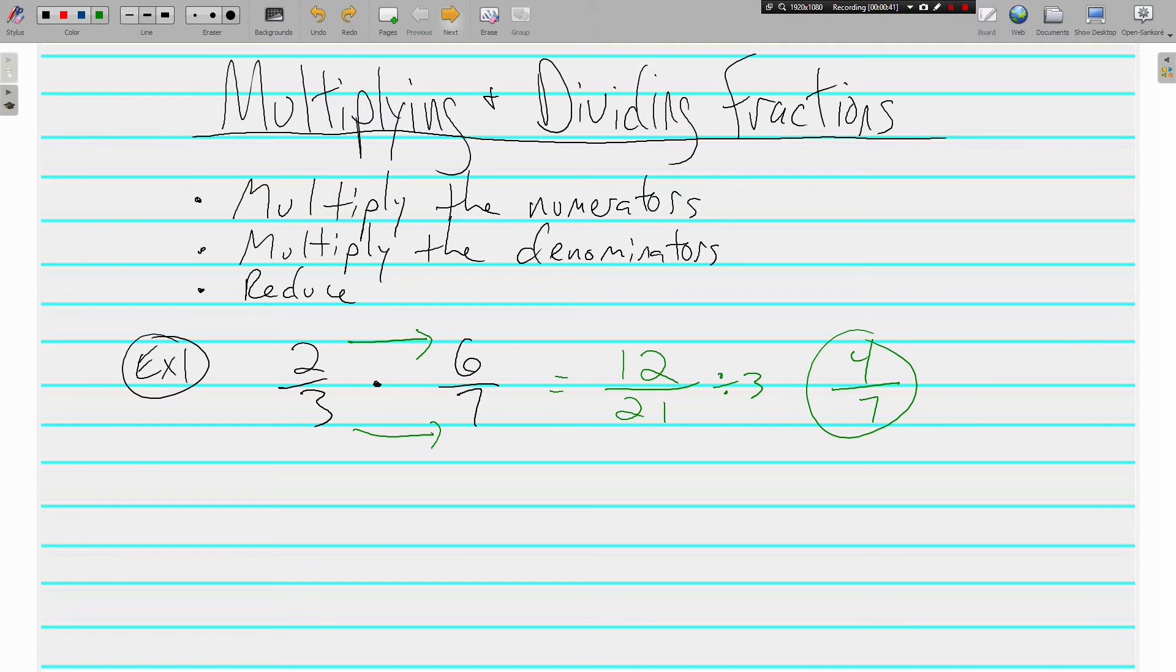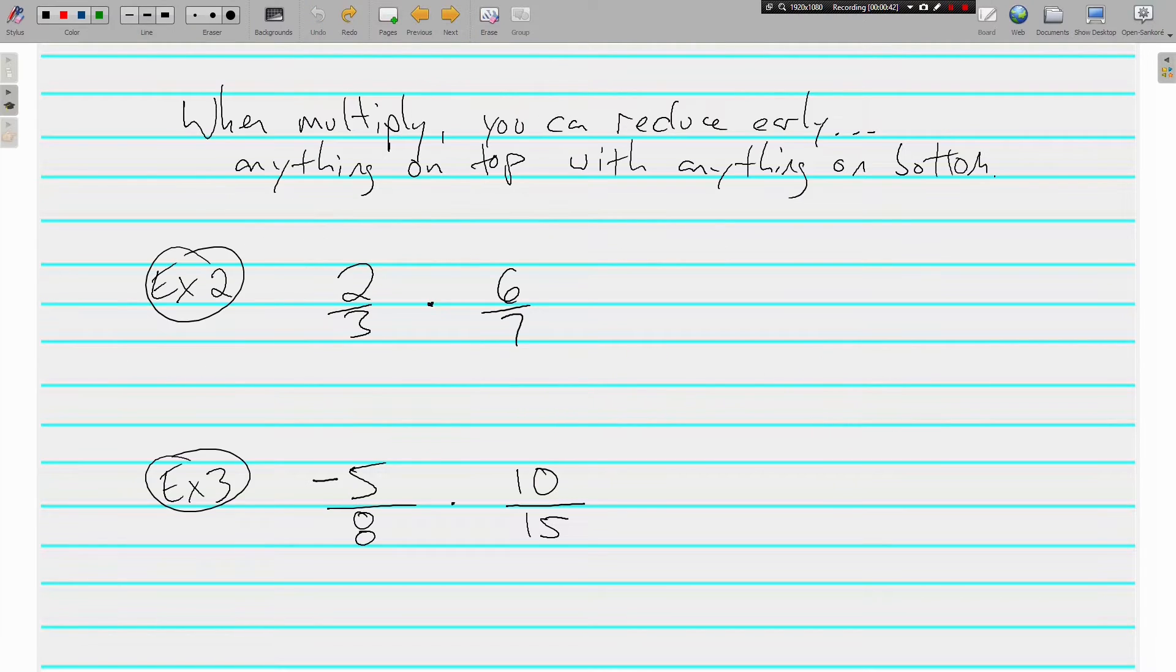One thing I like to do when multiplying fractions is I like to reduce early whenever it's possible. Reducing early, when you do that you can take anything on top of your fractions, anything in the numerators, and reduce it with anything in the denominator. Anything on top with anything on bottom.